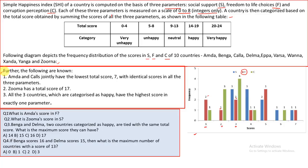Now let's read the further information. Amda and Kala jointly have the lowest score of 7 with identical scores in all three parameters. Zuma has a total score of 17. All three countries characterized as happy — which means 14 to 19 — have the highest score in exactly one parameter. The information given is very limited and the frequency chart is confusing, so I have put it into a table and will solve the questions according to the conditions given.